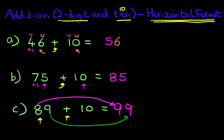So when adding two-digit numbers and 10 using the horizontal format, just concentrate on the tens and that will change. The units are not going to change. Have a practice with some numbers. It's very simple.